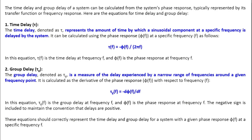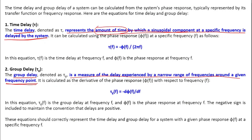Time delay represents the amount of time by which a sinusoidal component at a specific frequency is delayed by the system. Group delay, on the other hand, is a measure of the delay experienced by a narrow range of frequencies around a given frequency point. Time delay is associated with instantaneous frequencies, while group delay describes the change in phase delay for a particular group of frequencies.